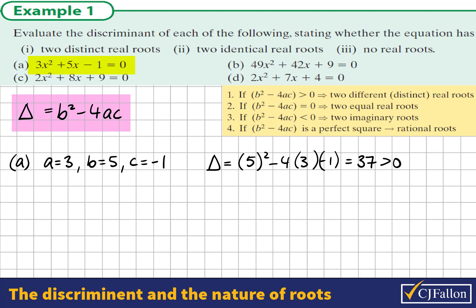37 is positive — it's greater than 0. Therefore, we understand that this quadratic equation would have two distinct real roots. In the formula, we would understand this because we're plus and minus the square root of 37, and therefore we're getting two different answers in the quadratic formula.